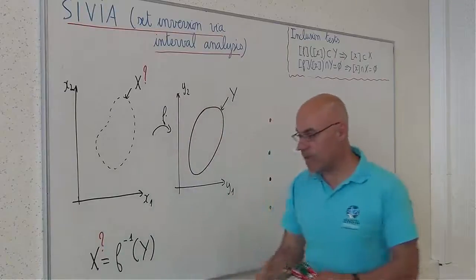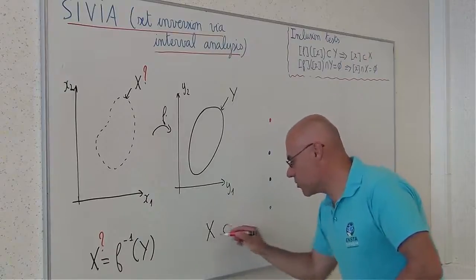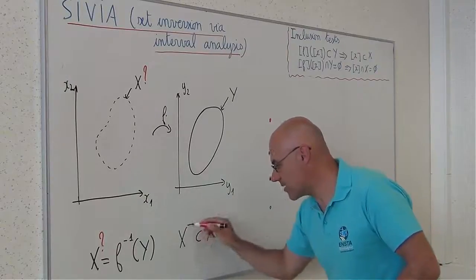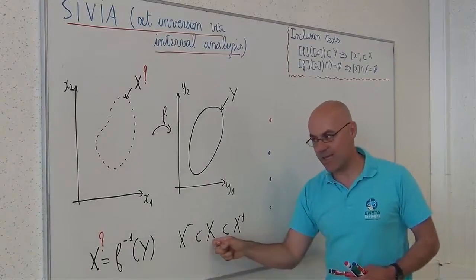And I will approximate it by two subpavings x minus and x plus, which brackets the solution set x.